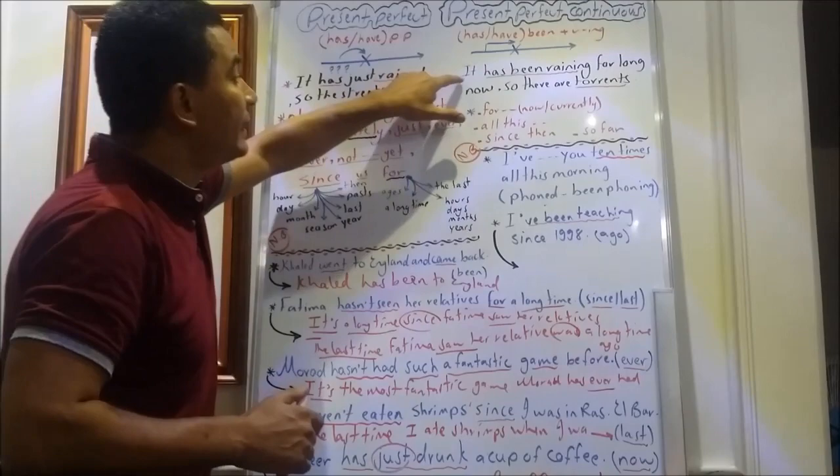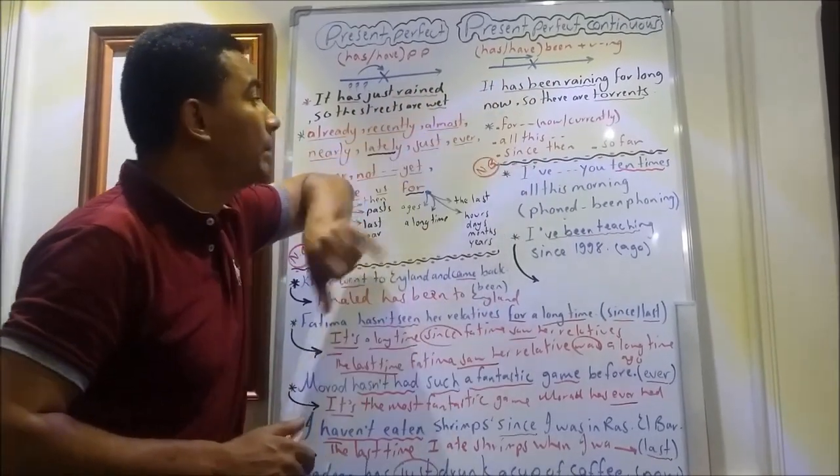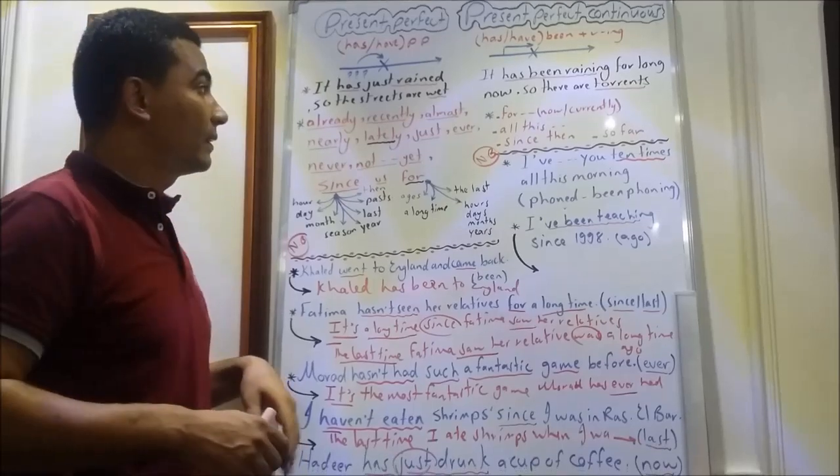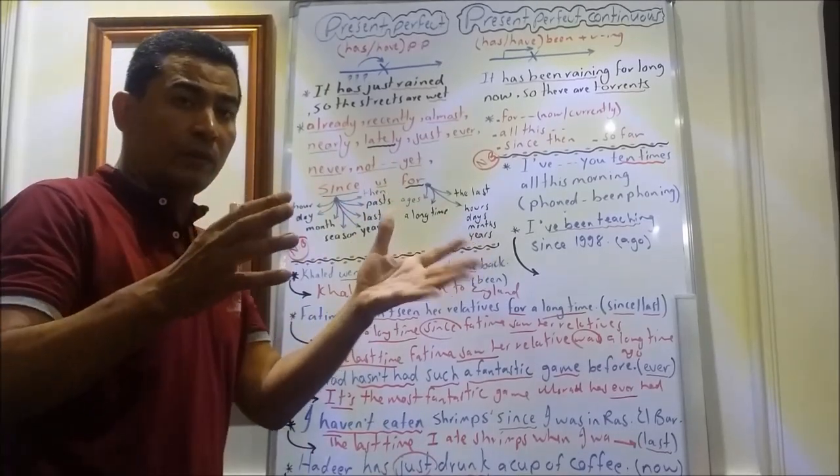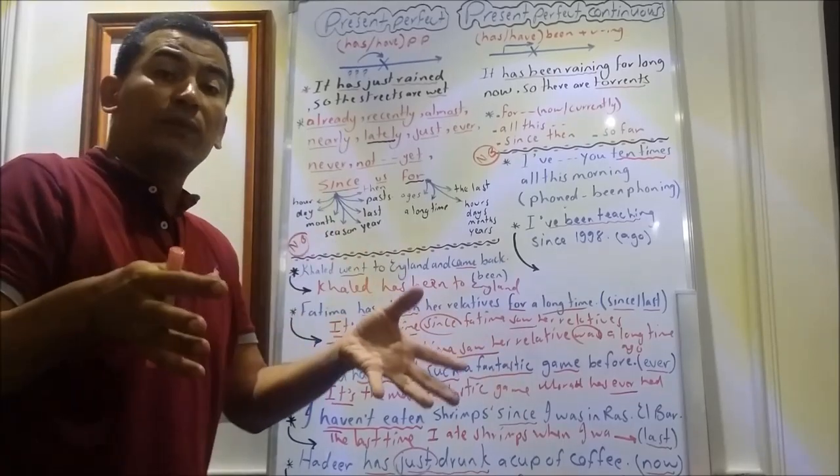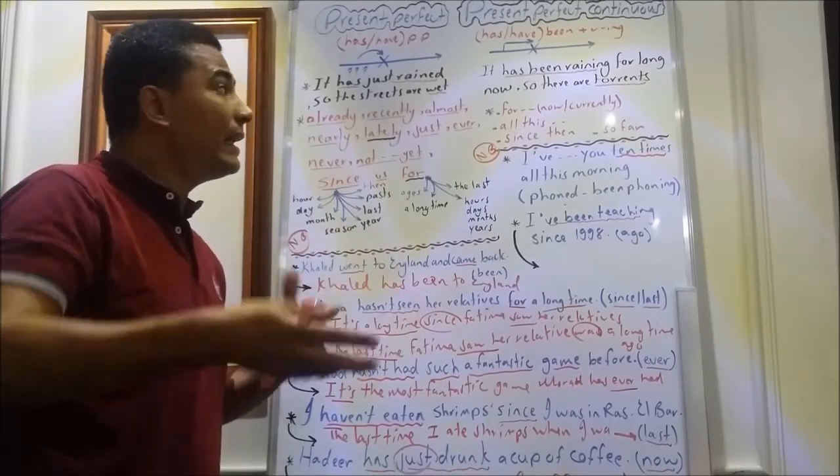If I have this sentence, it has been raining for a long time now, so there are torrents in the street. I have opened the window to find it raining. I look to the ground to find floods of water, torrents of water. It means that it has started raining a long time ago.